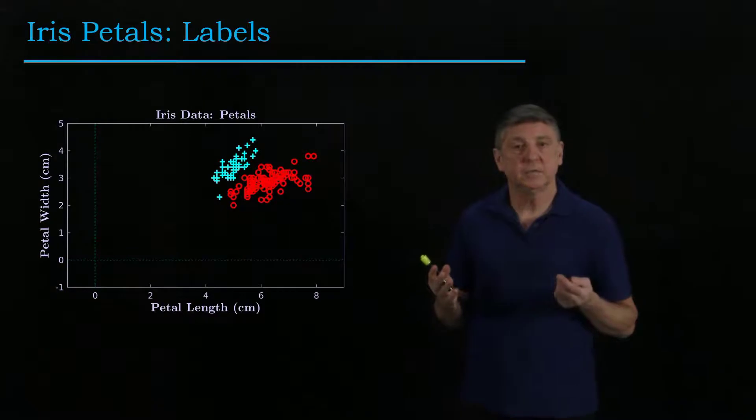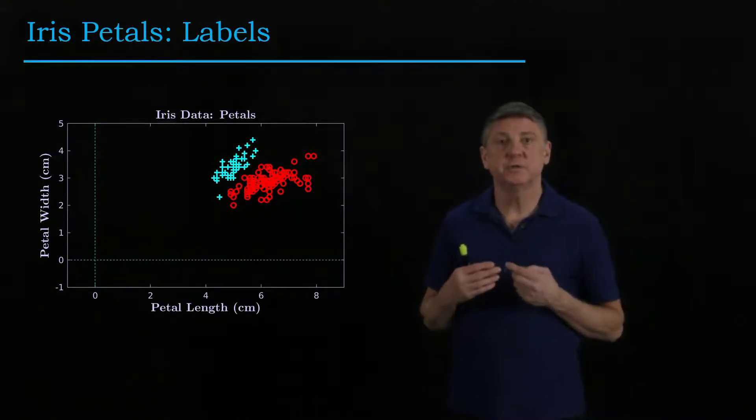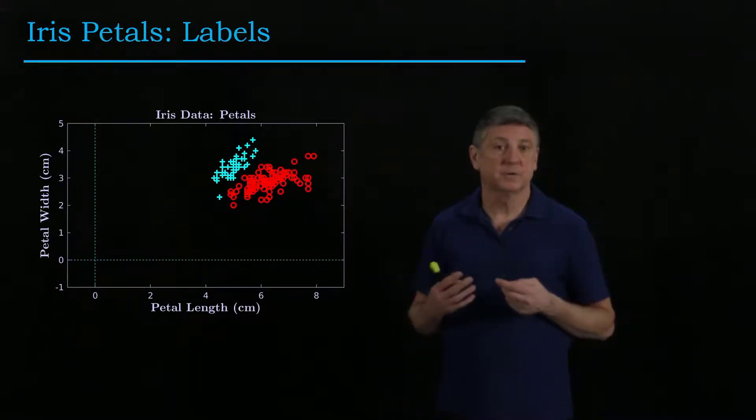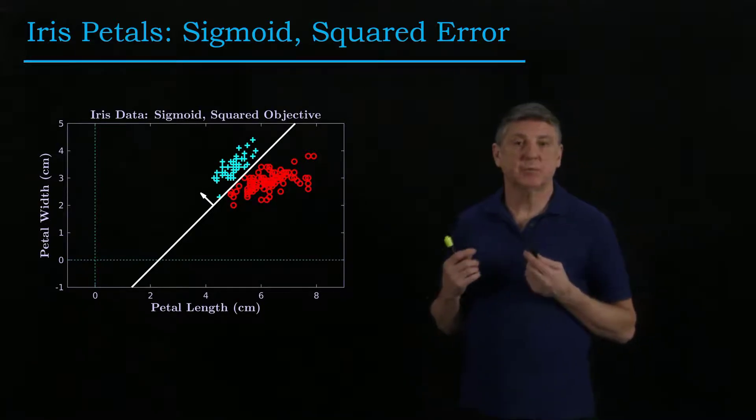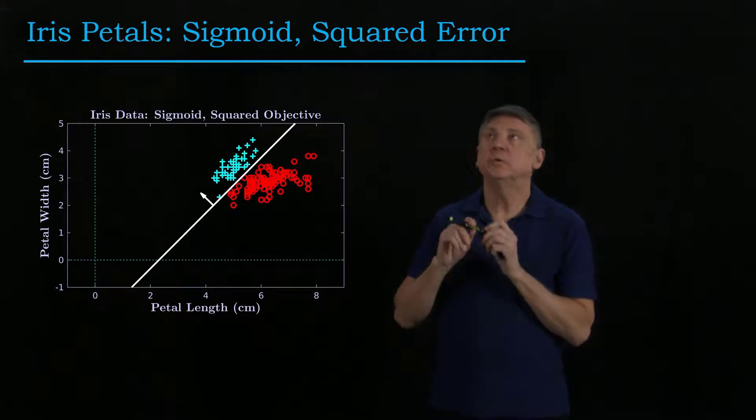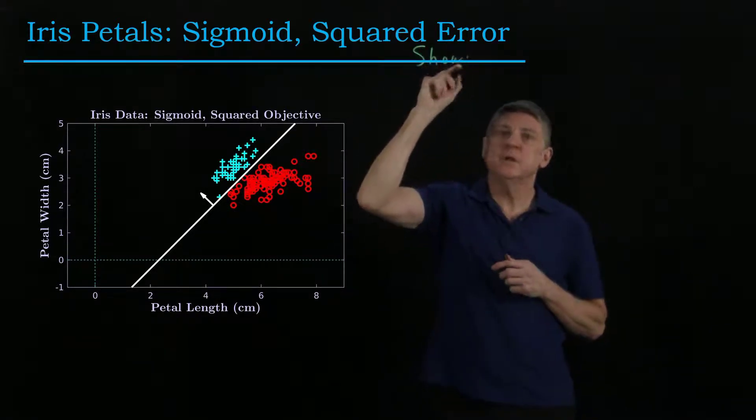So what I did was I implemented the logistic activation function using the squared error measure and a numerical solver that I wrote. And what I found was that this is the separation. Now, let's be clear here. What I'm doing is I am showing the use.